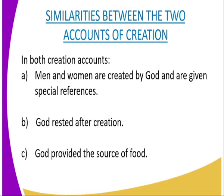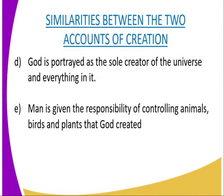In the first account, man and woman were created together; in the second, woman was created out of man's rib — but both are created by God. In both accounts, God rested after creation. In both accounts, God provided the source of food. And in both, God is portrayed as the sole creator of the universe and everything in it.